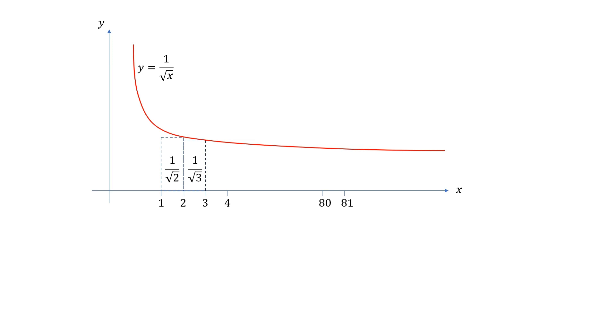And the width is 1, all the way to the last one which in this case has height 1 over root 81 and width 1. In this case the summation of the area of all these rectangles is less than the area under the curve from 1 to 81.